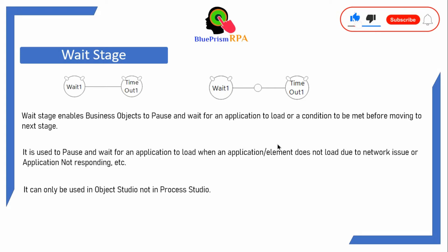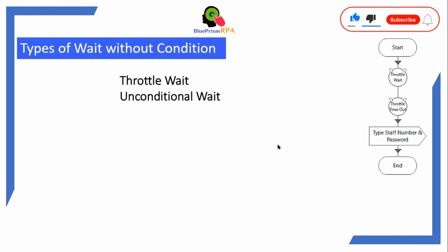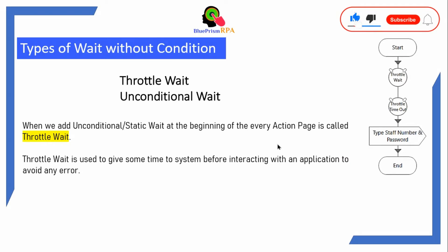The wait stage can only be used in the Object Studio, not in the Process Studio. There are two types of wait without condition — unconditional: throttle wait and unconditional wait. When we add an unconditional or static wait at the beginning of every action page, it is called throttle wait. Throttle wait is used to give some time to the system before interacting with an application to avoid any error. If you face a scenario where you have to first give some time to your bot, like 2 or 3 seconds, before launching that application or browser, you can use throttle wait there.